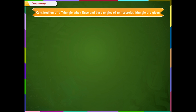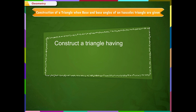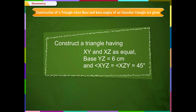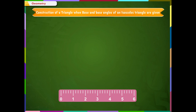Construction of a triangle when the base and base angles of an isosceles triangle are given. Let us construct a triangle having XY and XZ as equal sides. Base YZ is equal to 6 cm and angle XYZ is equal to angle XZY is equal to 45 degrees. Step 1: Use a ruler and draw a line segment OB of any convenient length as shown on the screen.